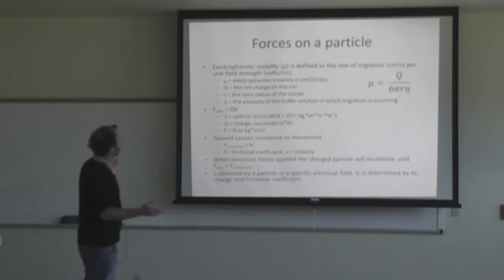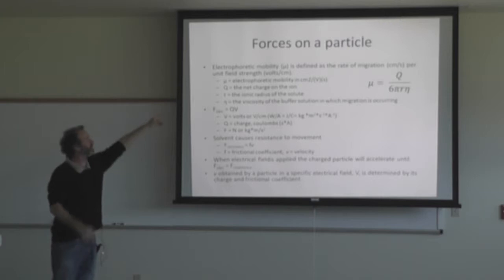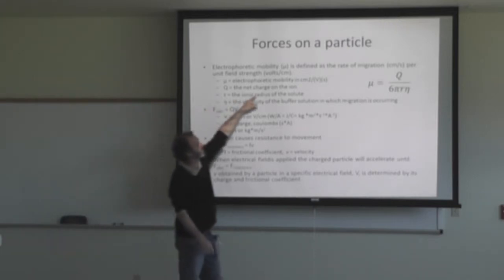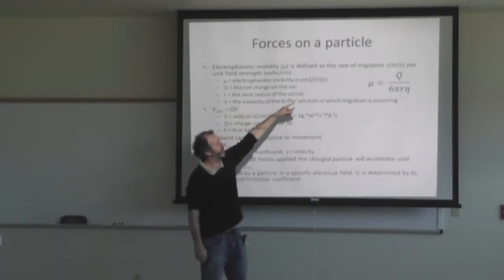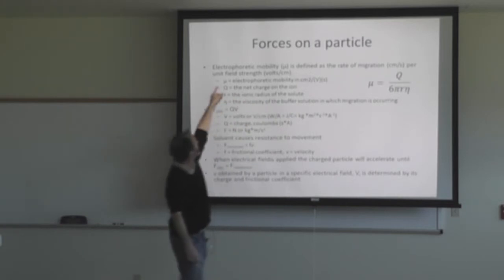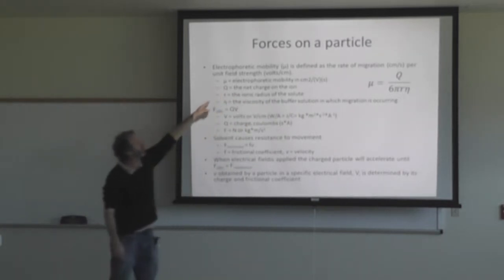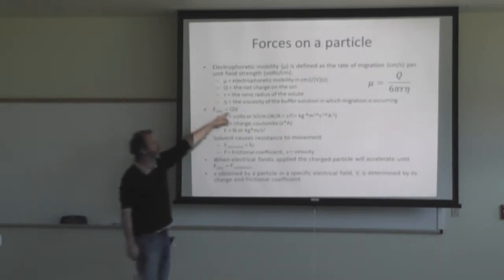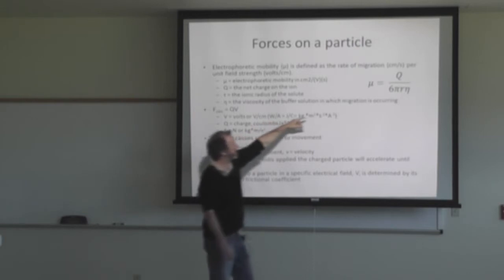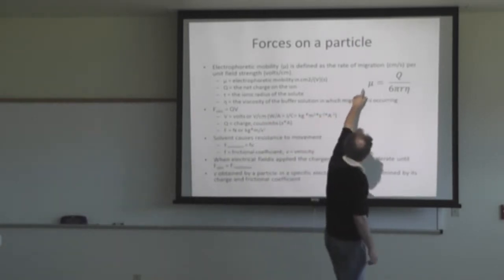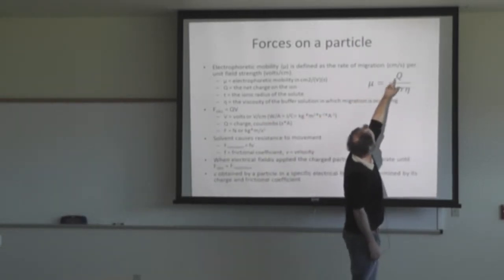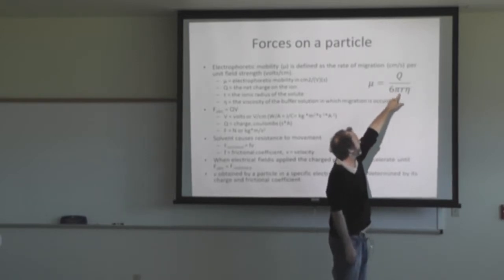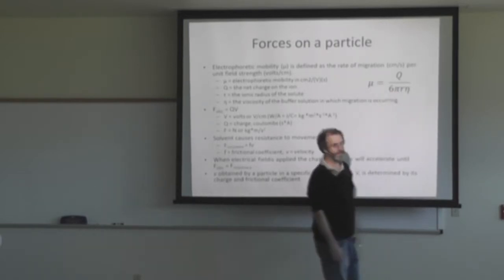Forces on the particles. So the electrophoretic mobility is defined as the rate of migration in centimeters per second per unit field strength in volts per centimeter. It can be defined like this: your electrophoretic mobility equals q divided by 6 pi r eta.